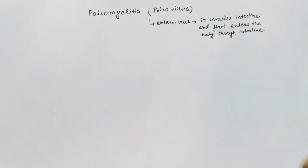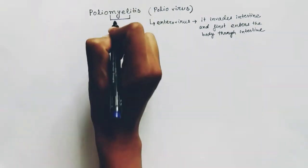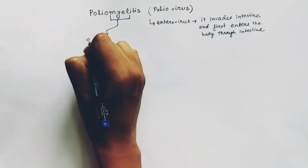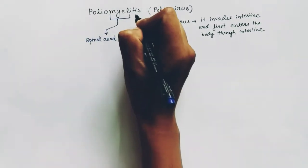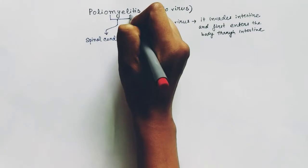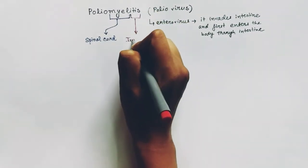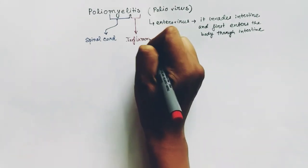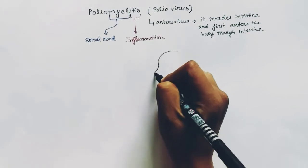In the word poliomyelitis, 'polio' refers to the poliovirus, 'myel' means the spinal cord — meaning it affects the spinal cord — and 'itis' means inflammation. So poliomyelitis is the inflammation of the spinal cord caused by the poliovirus.